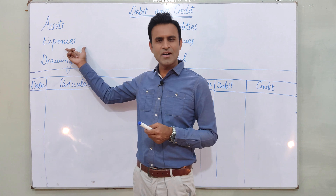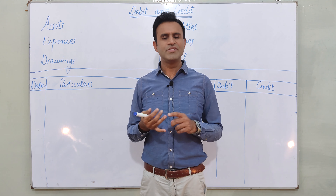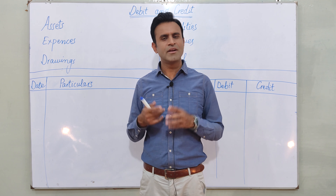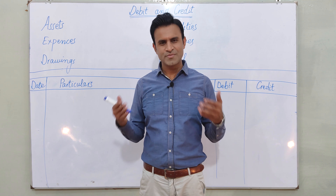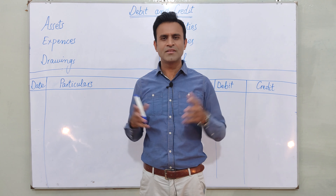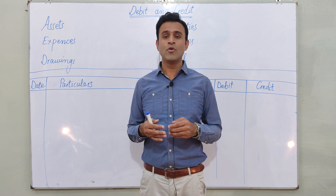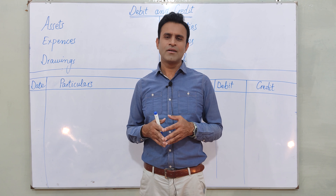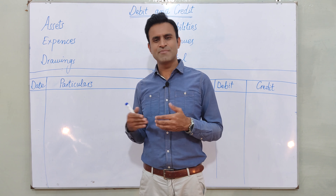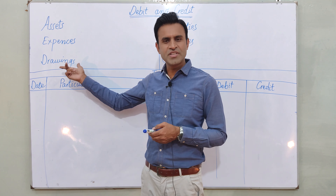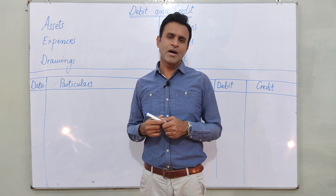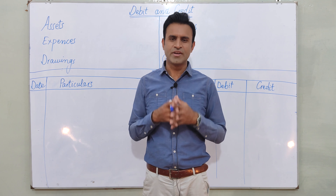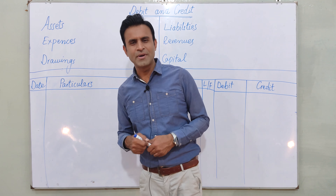Then we have expenses, which are costs for the business. We have wages, salary, rent expense, repairs expense — there are so many expenses: electricity bills, utility bills, telephone bills, water bills — these are all expenses. And drawings or withdrawals are when the owner takes money from their own business. These three things have a separate setup created.